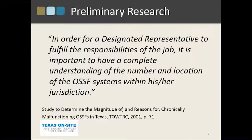We did some research using census records and estimated that there are probably 2 million OSSFs in the state. In the HGAC region, there are over 300,000 — about 15% of all systems throughout Texas. According to a 2001 report from the Texas On-Site Wastewater Treatment Research Council, in order for a designated representative — the person who permits OSSFs in a jurisdiction — to fulfill their responsibilities, it is important to have a complete understanding of the number and location of OSSF systems within their jurisdiction. In talking to designated representatives in the counties, we found that they didn't exactly know the number, and they certainly didn't know the location of each system.